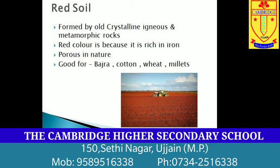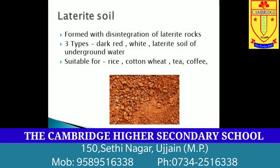Next type of soil is red soil. It is formed by the weathering of old crystalline igneous and metamorphic rocks. It appears red in color because it is rich in iron. It is porous in nature. The types of crops grown in this soil are bajra, cotton, wheat, millets, etc. This brings us to the next type of soil which is laterite soil. It is formed with the disintegration of laterite rocks. Yeh mitti un ilaaqon mein paai jaati hai jahaan sukha aur geela mausam bari bari se aata hai. It is of three types: dark red laterite soil, white laterite soil and laterite soil of underground water. This soil is suitable for rice, cotton, wheat, tea, coffee, etc.